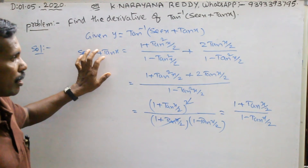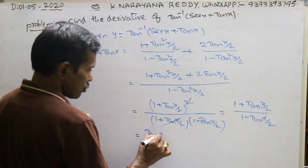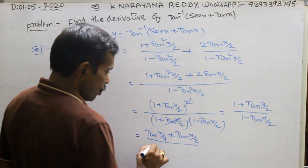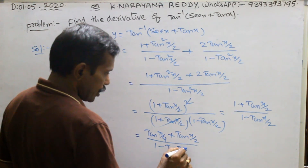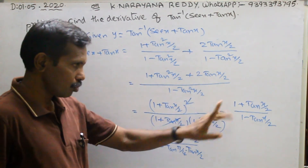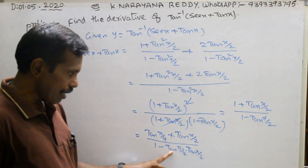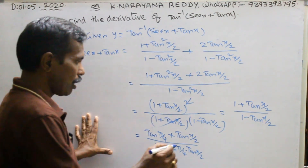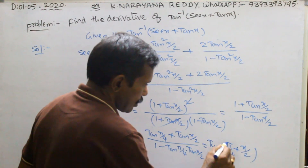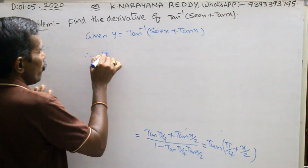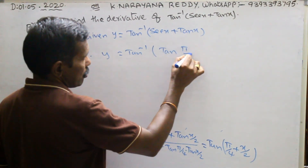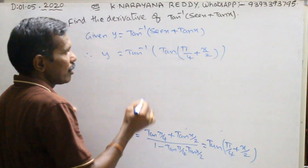This is nothing but tan(π/4 + x/2), using the tan addition formula: (tan A + tan B)/(1 minus tan A·tan B). Here tan(π/4) = 1 and tan(x/2) remain. So sec x plus tan x equals tan(π/4 + x/2). Therefore y equals tan inverse of tan(π/4 + x/2), and the tan and tan inverse cancel, giving y = π/4 plus x/2.